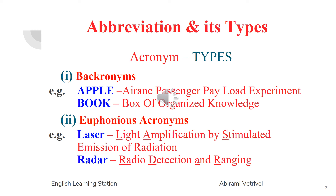The next type of acronym is Euphonious Acronym. Euphonious Acronyms are acronyms which are constructed by adding or subtracting letters to produce a pronounceable word. Examples include LASER and RADAR.